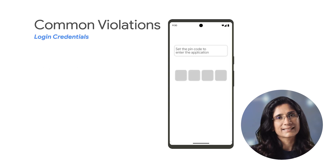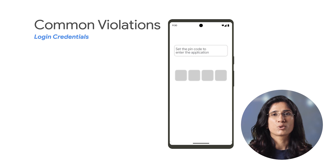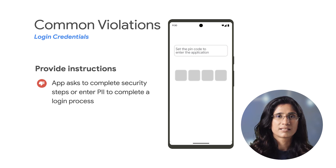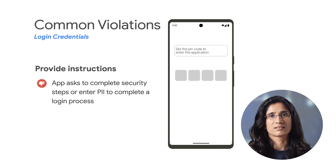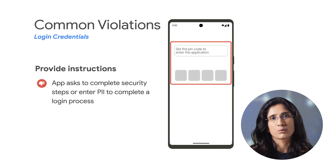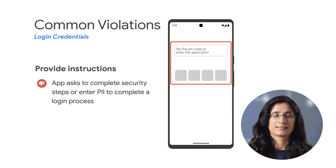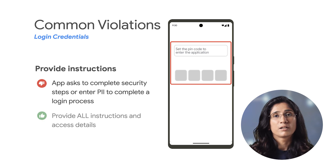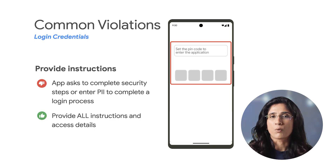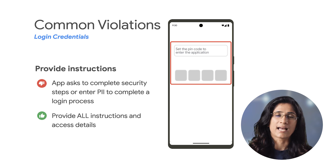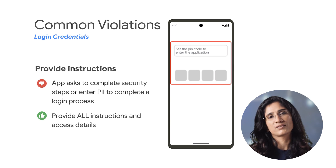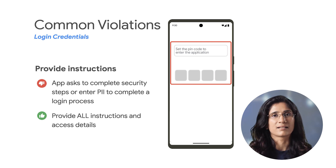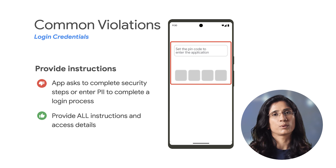Our next example shows an app that asks to complete security steps — for example, setting a PIN code to complete a login process. If this is the case, remember to provide all instructions and access details via the instructions field in the Play Console, so that the team can review the app.